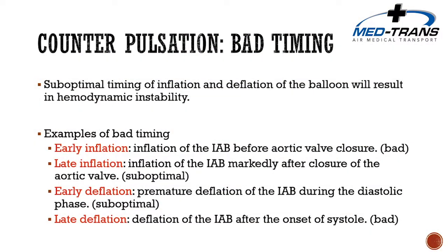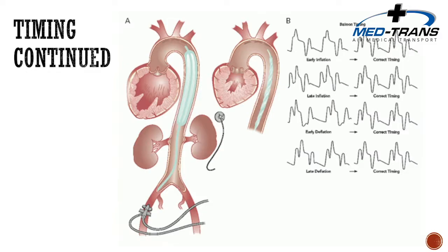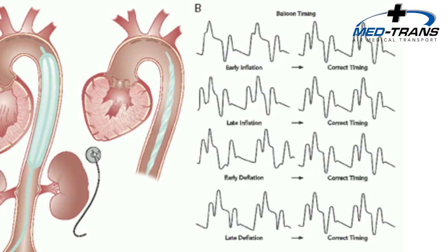Bad or sub-optimal timing of counter-pulsation can result in hemodynamic instability. Early inflation occurs before aortic valve closure — one of the worst scenarios. Late inflation is sub-optimal inflation markedly after aortic valve closure. Early deflation is premature deflation during the diastolic phase — also sub-optimal. Late deflation occurs after the onset of systole. Printed strips from the balloon pump show the EKG on the top line and augmented beats on the second line to help identify these timing errors.